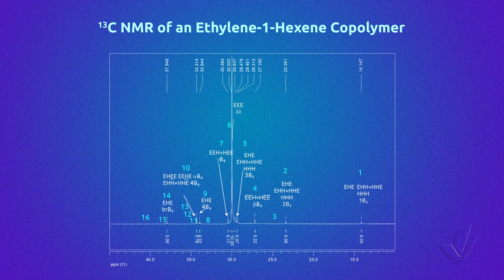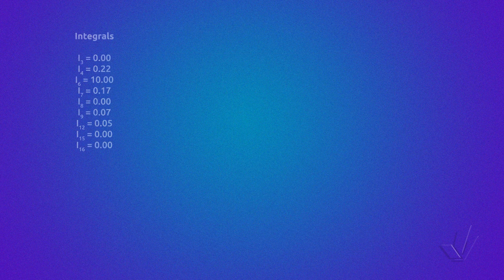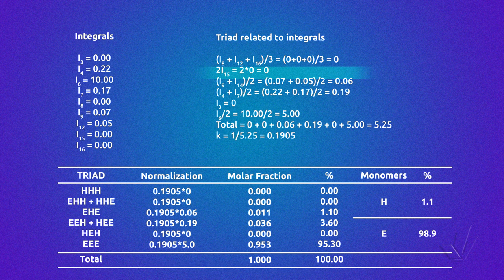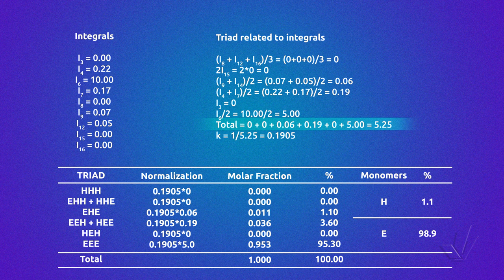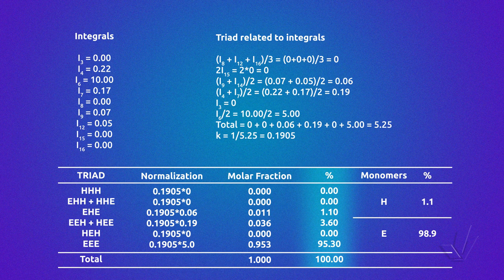Returning to our ethylene-1-hexene spectrum, we take the peak integrals that are marked below each peak. Then, we introduce the integrals in the equations that we have obtained previously from the table. We add all the values for each triad and divide by the total — or equivalently, multiply by the normalization constant, that is the inverse of the total value. In this way, the final value of each triad is their molar fraction, and if we multiply by 100, we have the percentage of each triad.